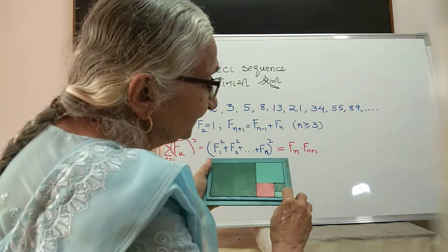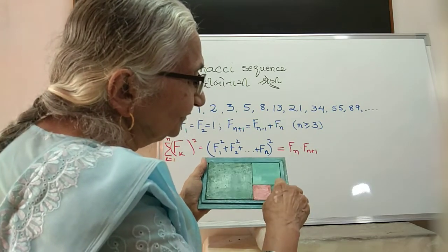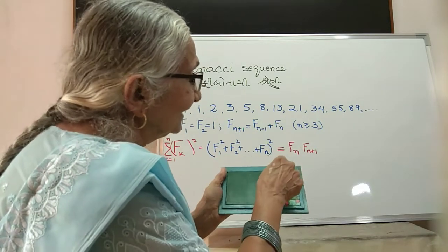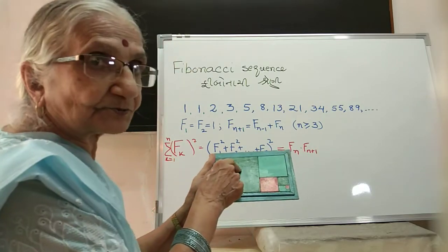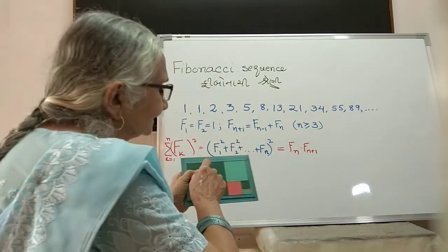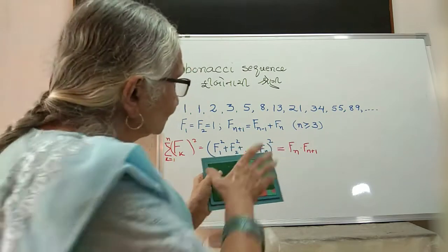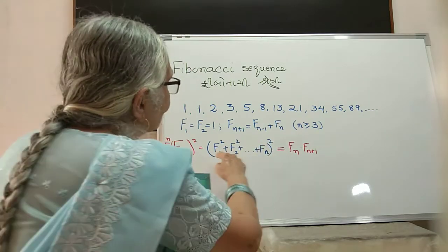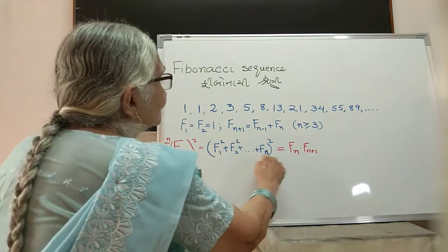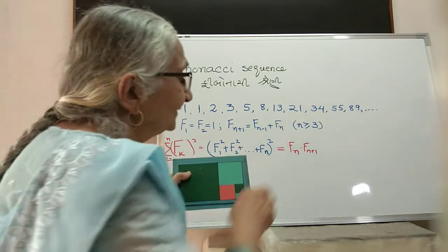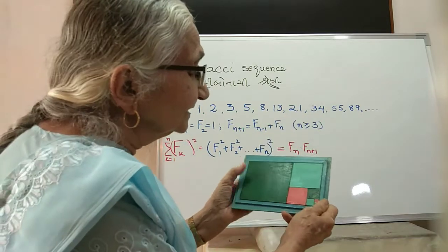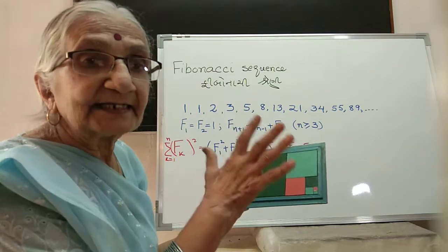So this is F1², F2², F3², F4², and so on. This is F_(n-1)², this is F_n². So all this gives us the left-hand side. We have to show that it is the right-hand side. Now what is the whole area equal to? It is the whole rectangle.